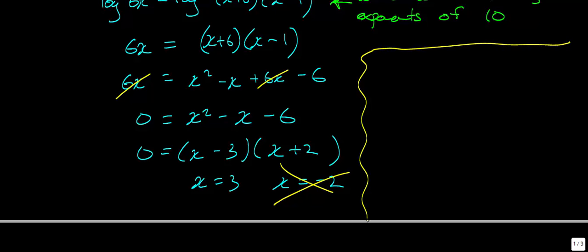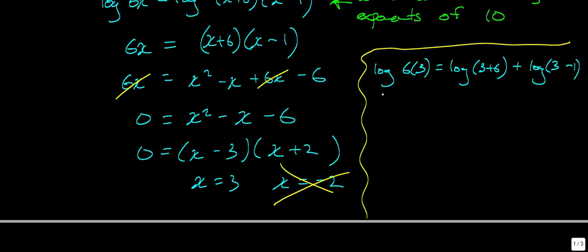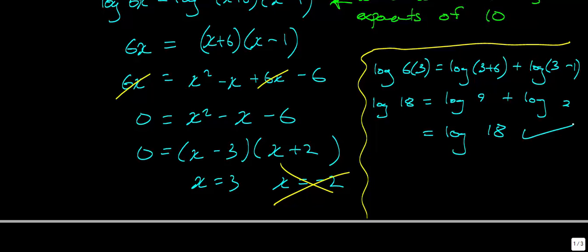Let's do a quick check. Substituting x equals 3 into the original equation: log of 18 equals log of 9 plus log of 2. Using the product rule, log of 9 times 2 is log of 18. Both sides are equal, so we're satisfied that x equals 3 is correct.